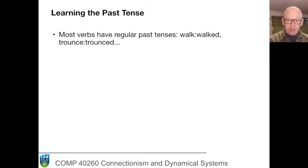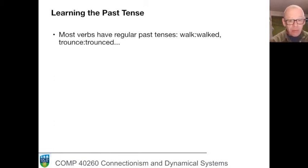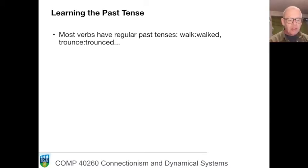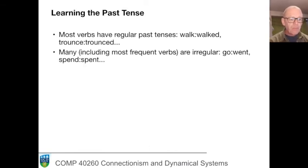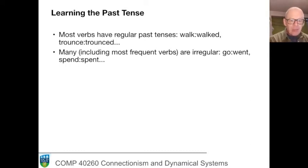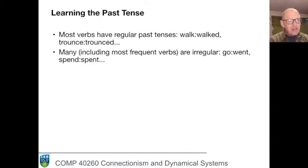Most verbs in all languages have perfectly regular forms in the different tenses. In English we have a simple past tense, and you form it by putting 'ed' at the end of the word if you're writing, or some pronounced variation. So from 'walk' we get 'walked', from 'trance' we get 'tranced', and so on. But there are a lot of verbs which have irregular forms, and they need to be learnt individually. These include all the most frequent verbs of English, and in this respect English is quite like every other language.